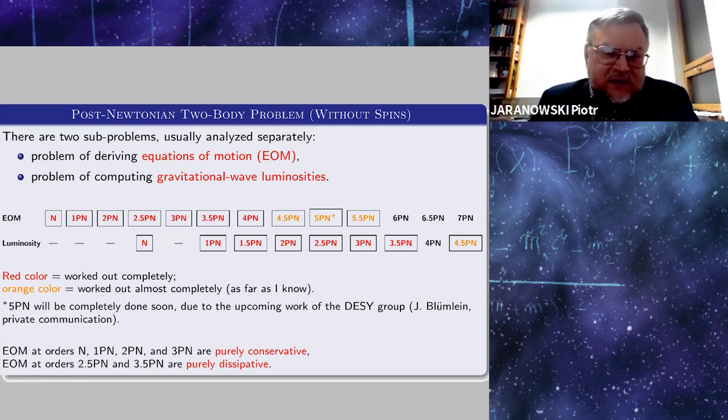I will not talk about any spin-dependent effects, so I have displayed here orders related with the pure orbital motion of two structureless point masses. Red color means orders which are completely worked out. By orange, I denoted those orders which are almost completely worked out. I would like to remark on the five post-Newtonian order—most probably next week in the archive there will be a new paper by the DESY group in which this order will be completely done.